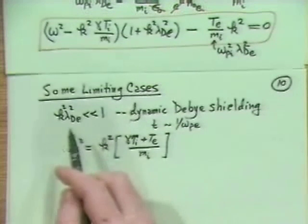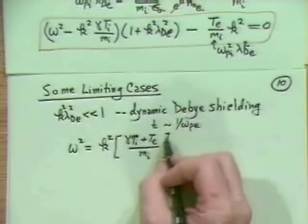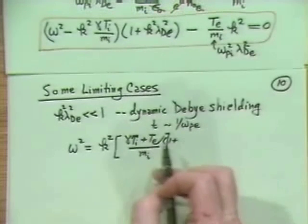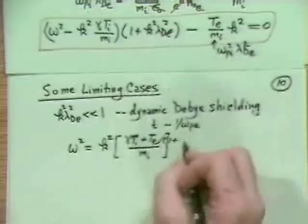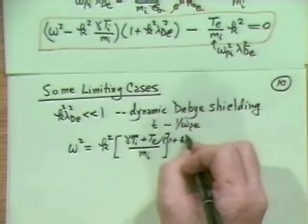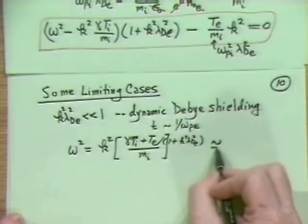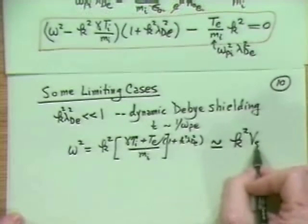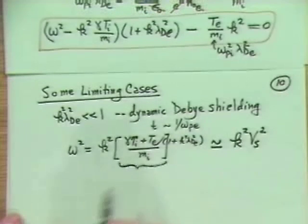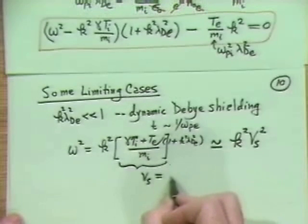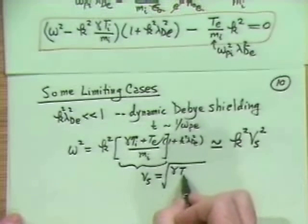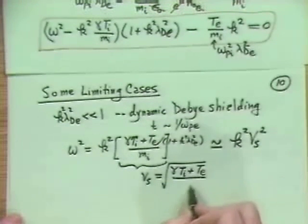If I had kept a little bit of k squared lambda Debye squared, the Te term would have been divided by 1 plus k squared lambda Debye squared. We write this as k squared V sound squared, where V sound in a plasma is V sound equals sqrt of gamma Ti plus Te all divided by the ion mass.